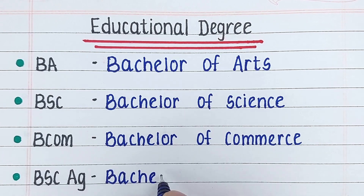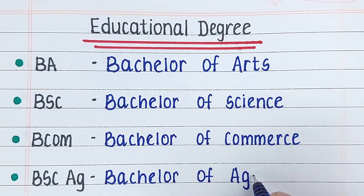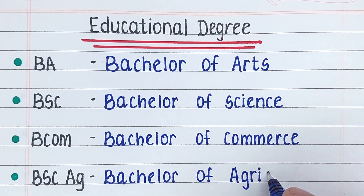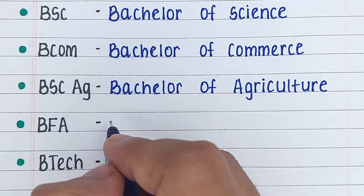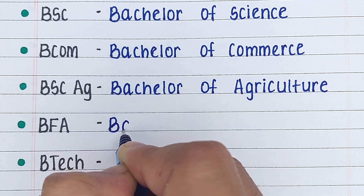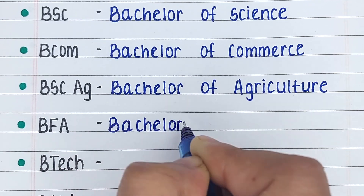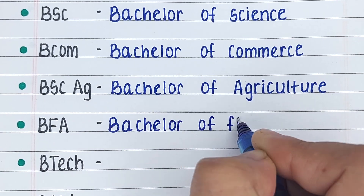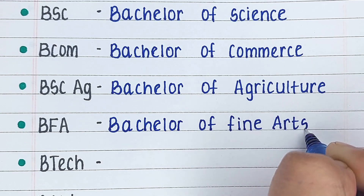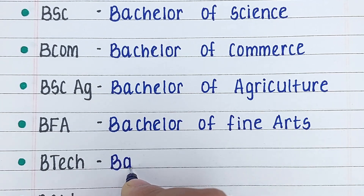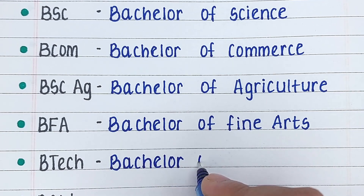Next is BSCAG. BSCAG stands for Bachelor of Agriculture. Next is BFA. BFA stands for Bachelor of Fine Arts. Next up we have BTECH.